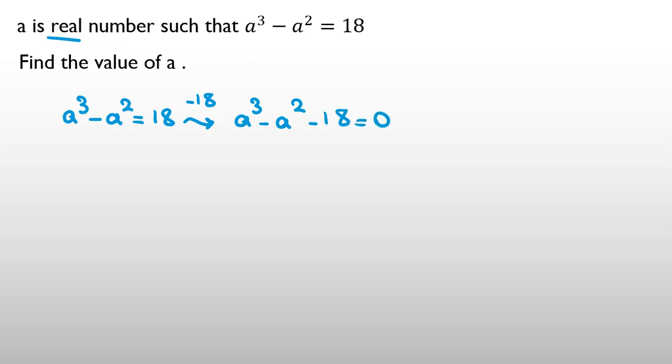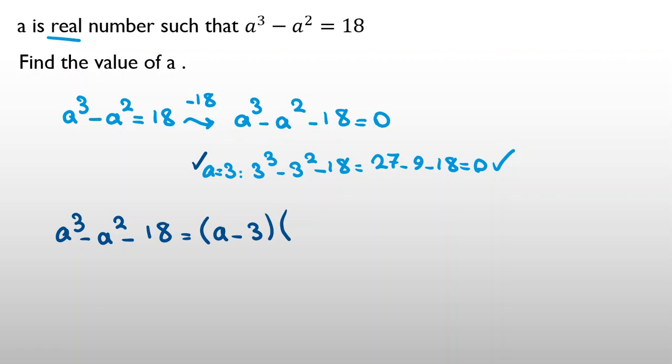Now, I want to find one answer here. If you check a = 1, negative 1, 0, 2, 3, you will see 3 works. If I consider a equal to 3, 3 cubed minus 3 squared minus 18 equals 27 minus 9 minus 18, which is 0. So because a = 3 works, we have an important theorem. Because a = 3 works, we can say one factor is a minus 3, and we can factorize this.